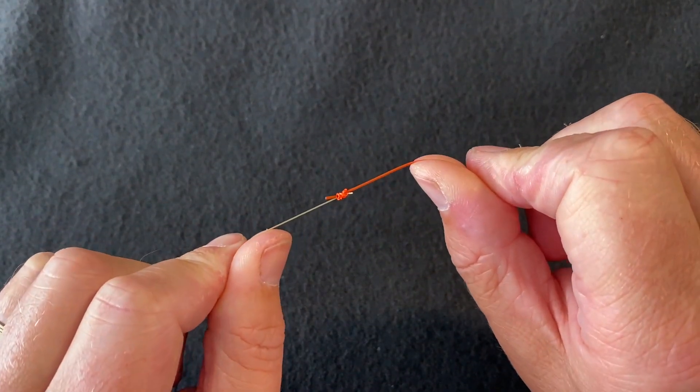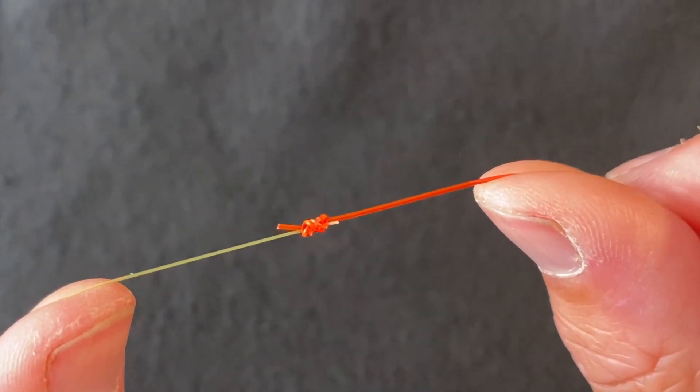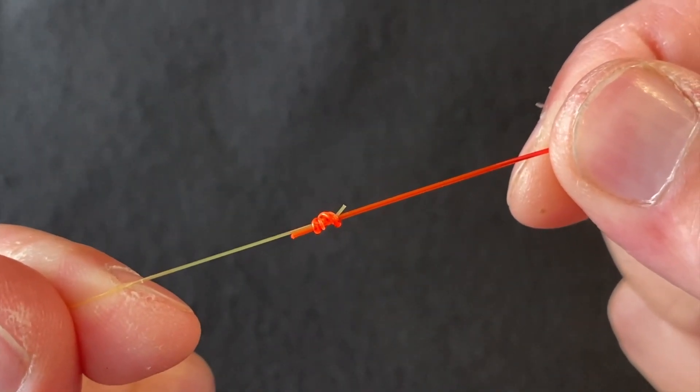And there you have your three-turn water knot, also known as the three-turn surgeon's knot. It's a very strong knot and it's quick and easy to tie.